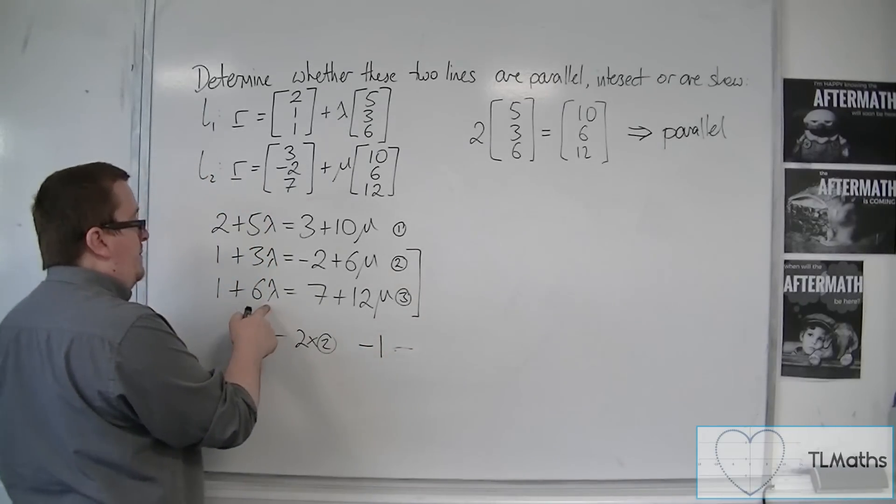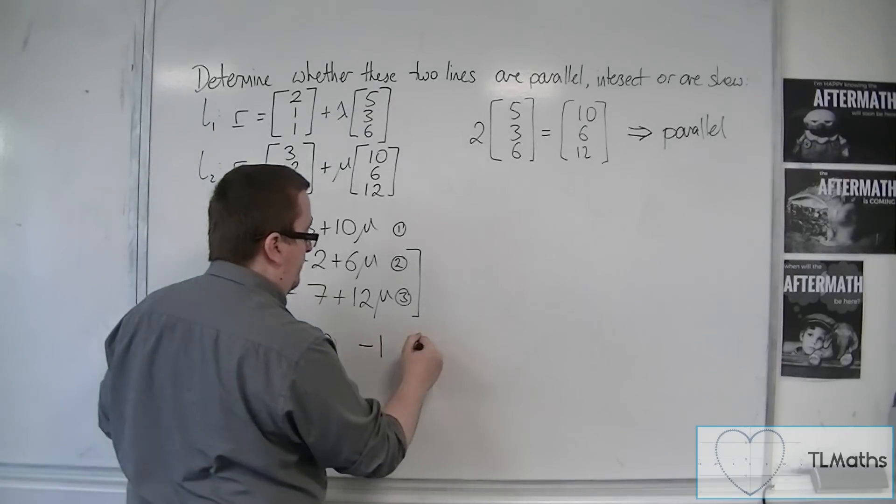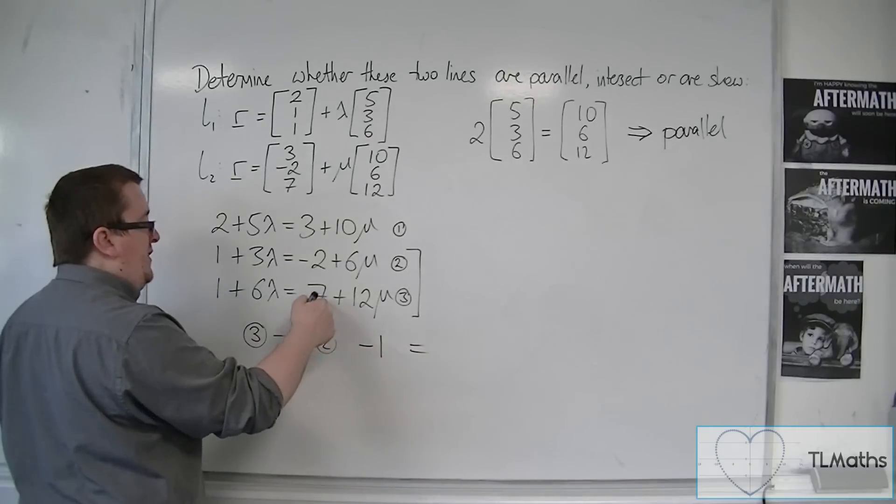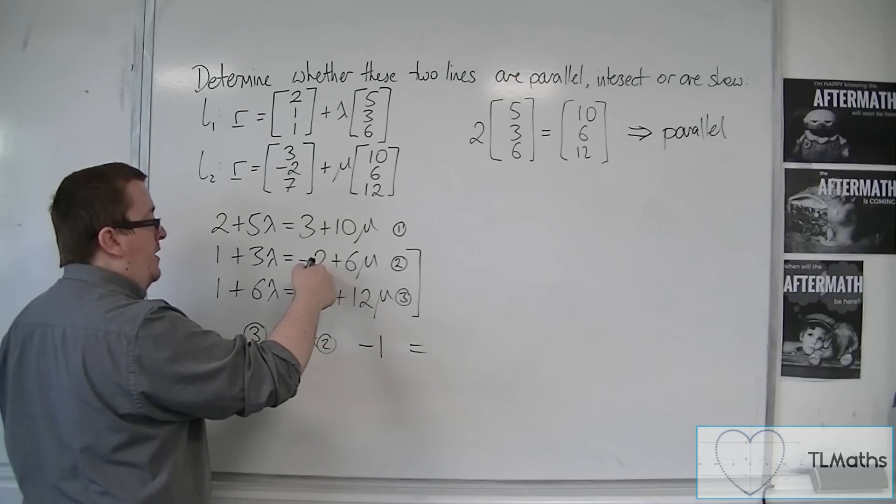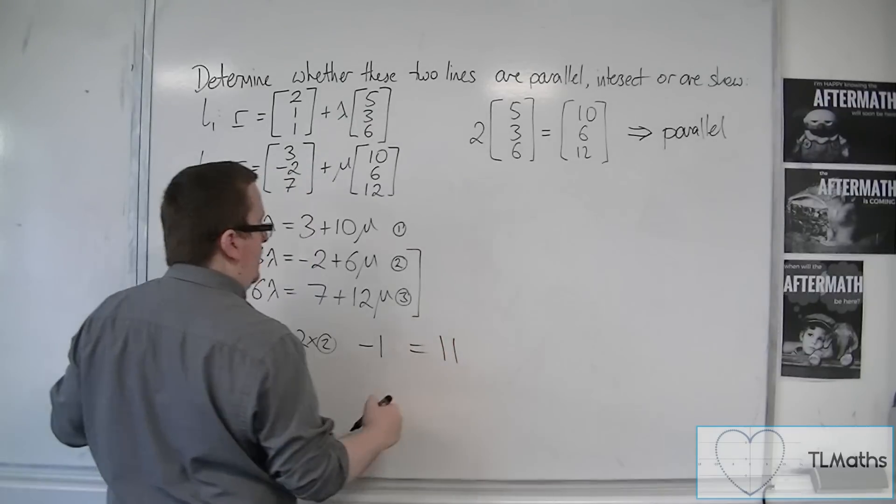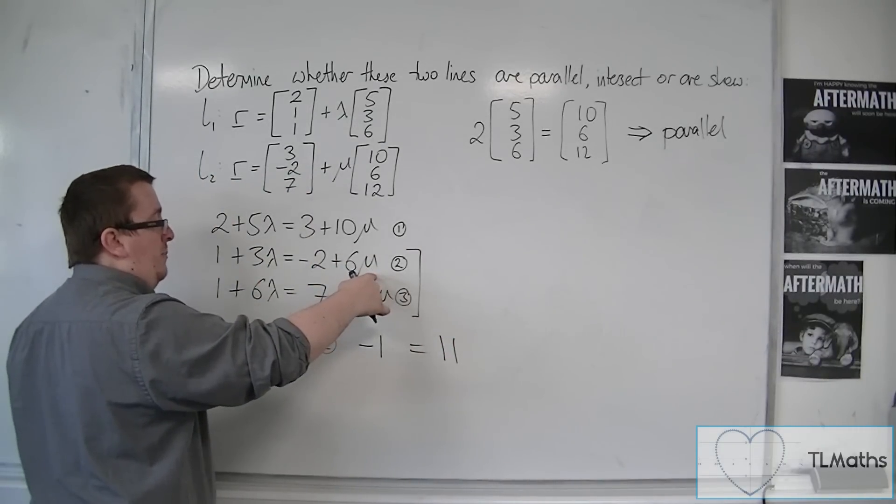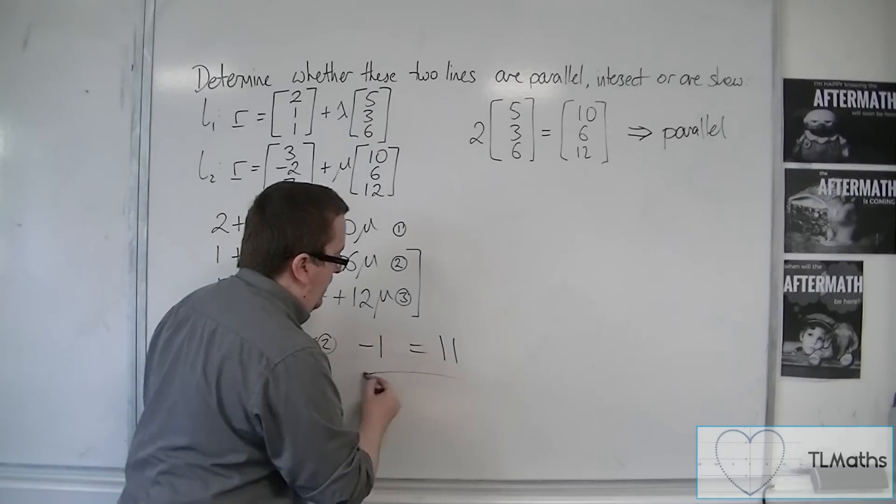Then we've got 6 lambda, take away two lots of 3 lambda. So the lambdas also cancel. You've got 7, take away two lots of minus 2. So that's 11. And 12 mu, take away two lots of 6 mu, is 0. And that's what you get left with.